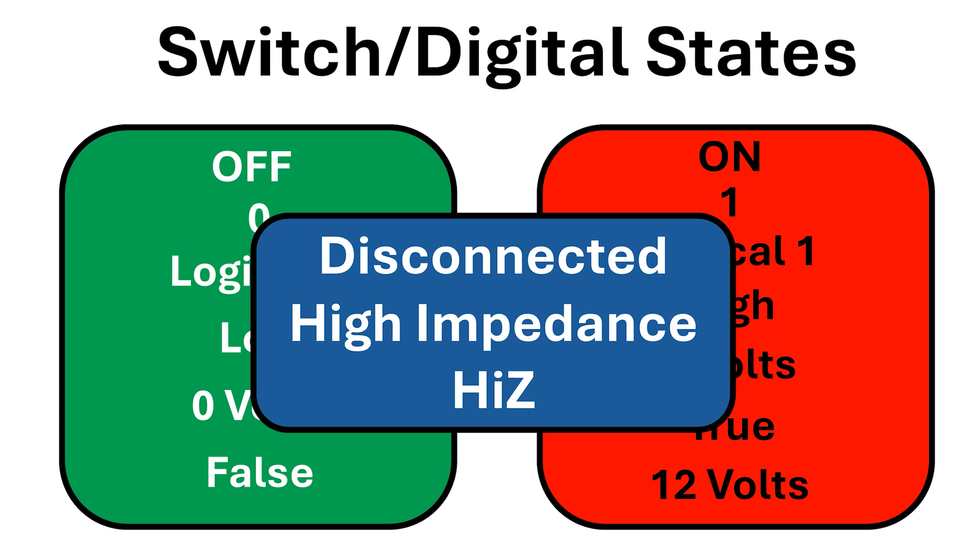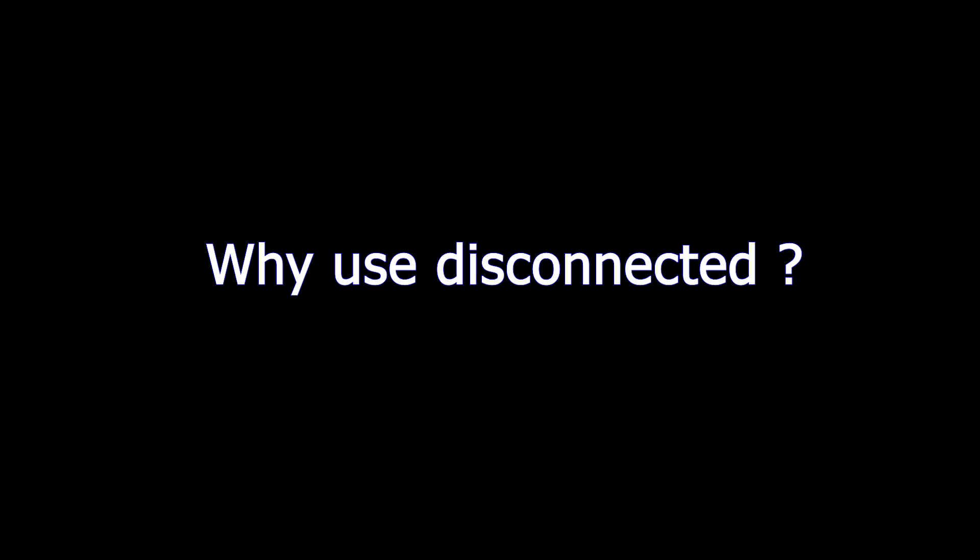Technically, disconnected is also called high impedance, or high Z. You'll see these terms in the literature quite a bit. Why do we use disconnected as a state? Well, it lets us do something we normally can't do, and that's directly connect the output of two gates together.